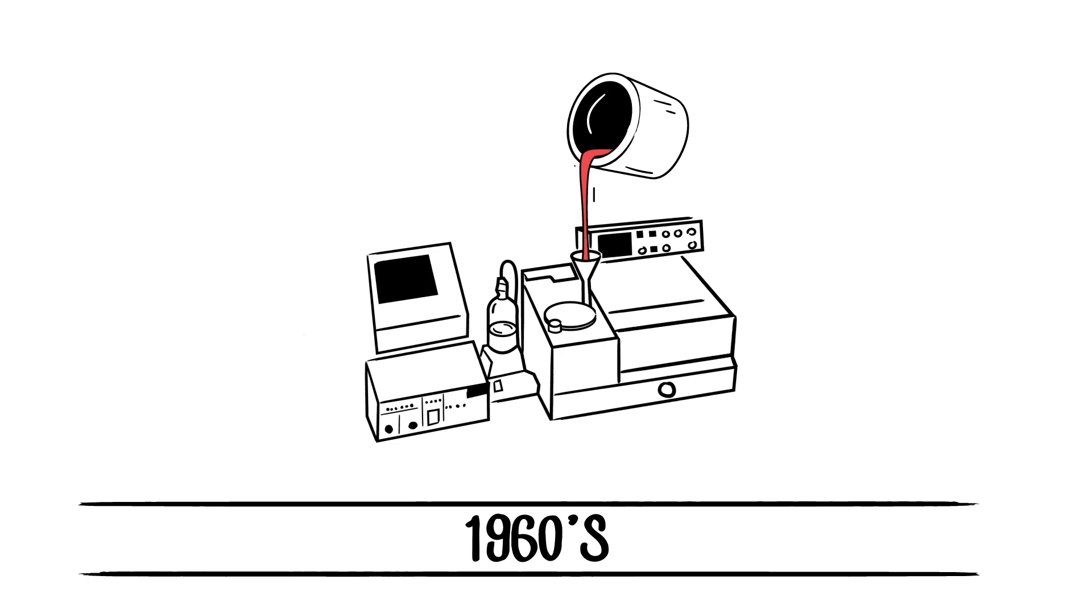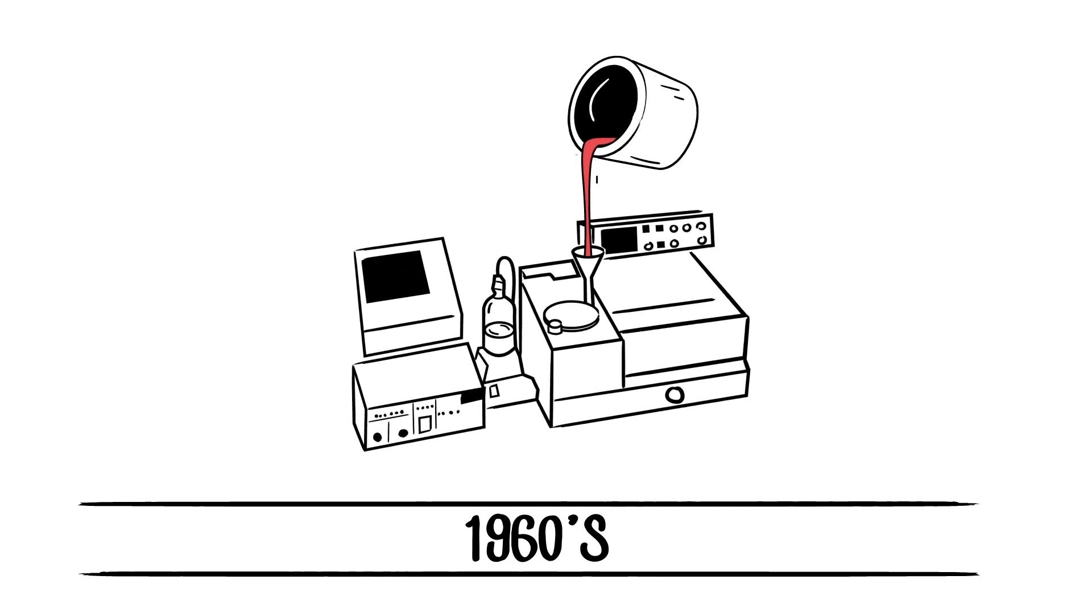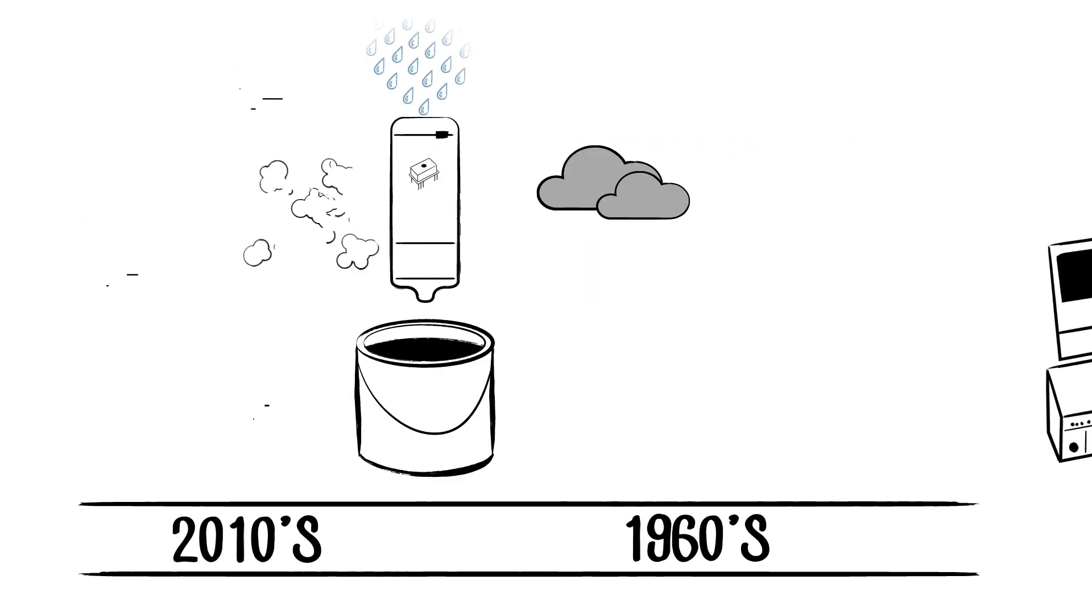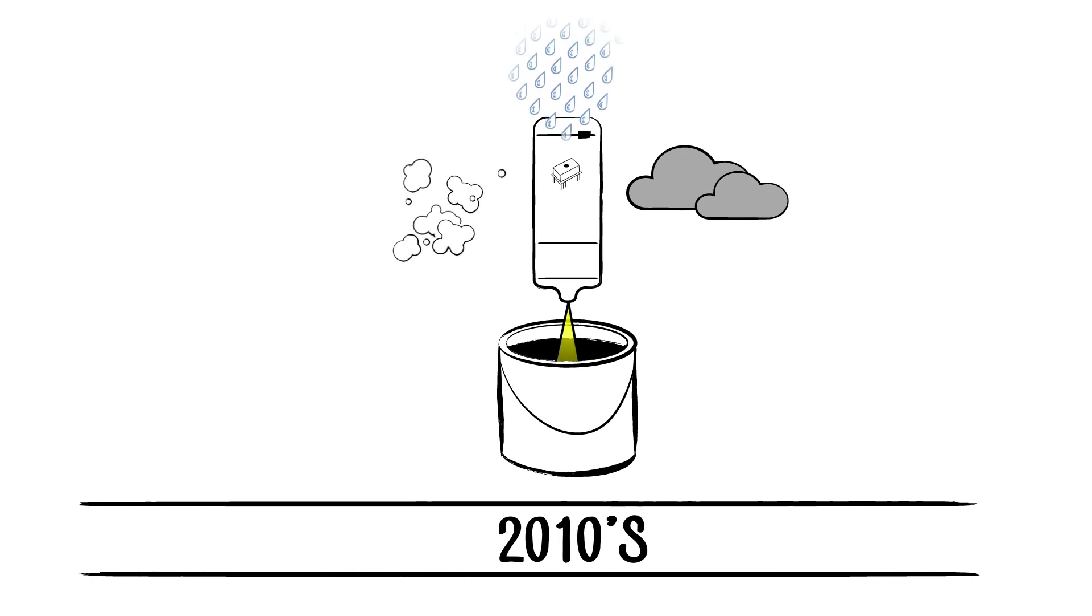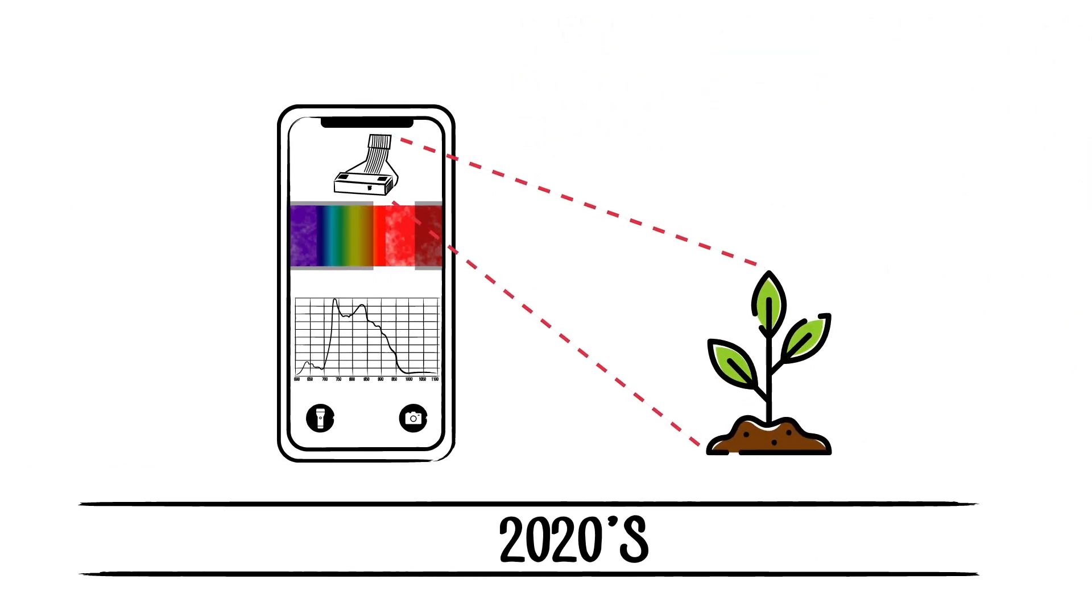From large benchtop units implemented in research and development labs in fixed industrial settings, to the micro-spectrometer, introducing the ability to perform portable measurements in various operating conditions, and the SMD spectrometer, paving the way for future spectroscopy applications to sit in the user's hand.